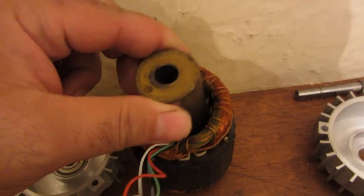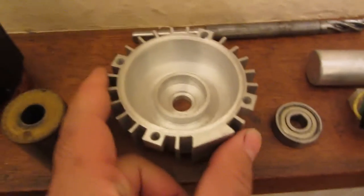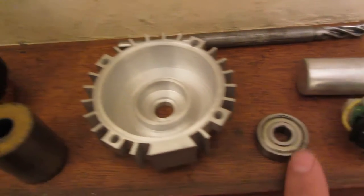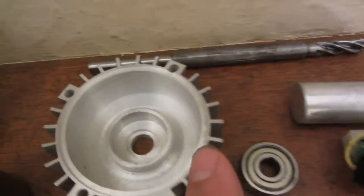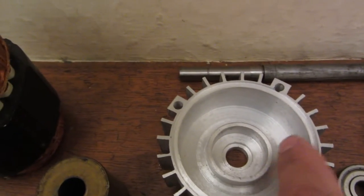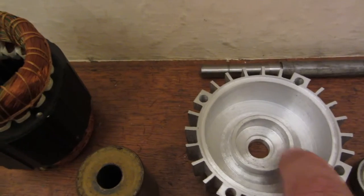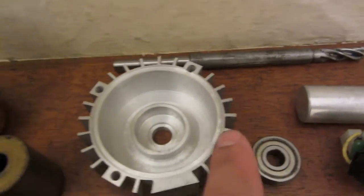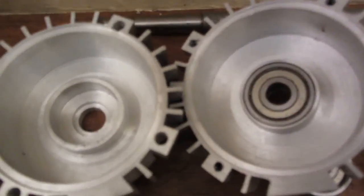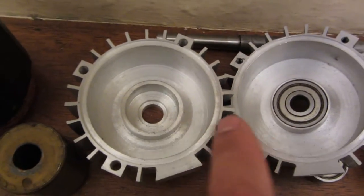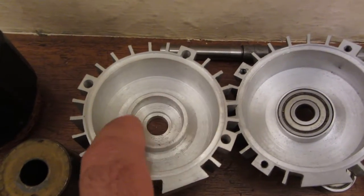Now we have front motor end shield, front bearing. Notice the machining on the front motor end shield is more robust because this is supposed to take more load than the rear one. So if I put them side by side you can compare them. The outer part on this one is more pronounced, that one is less.